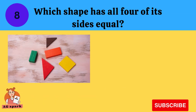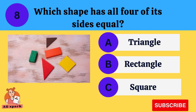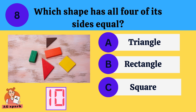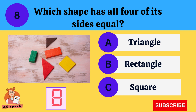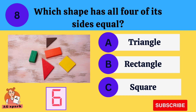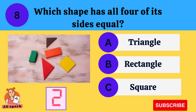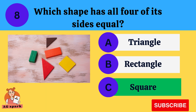Which shape has all four of its sides equal? Triangle, rectangle, square. Answer: Square.